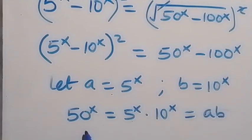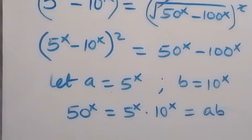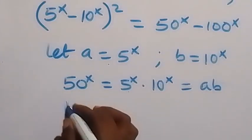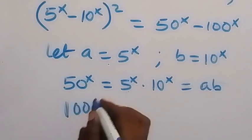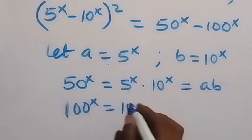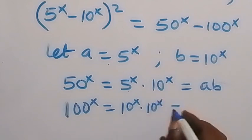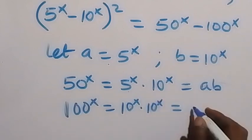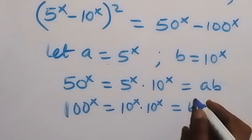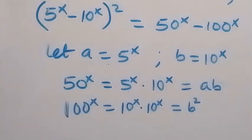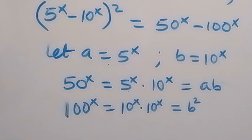We can also write 100 raised to power x as 10 raised to power x times 10 raised to power x, which equals b times b, and b times b is b squared. So 100 raised to power x is b squared. Now let's write the equation in terms of a and b.